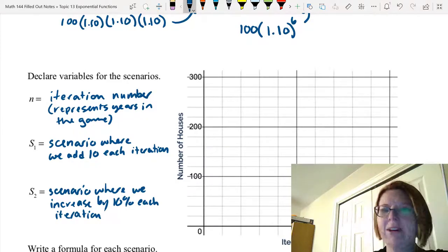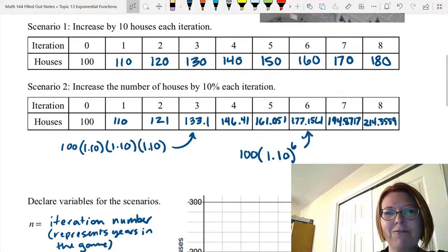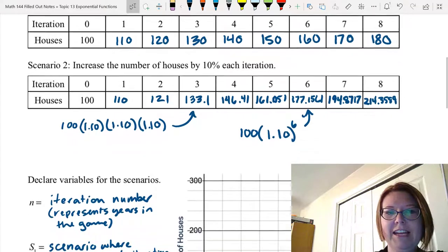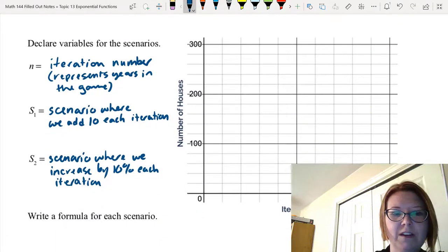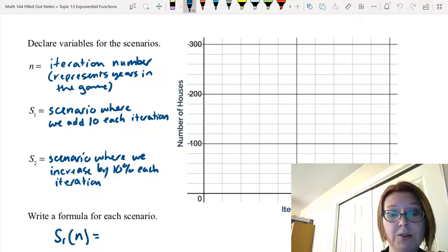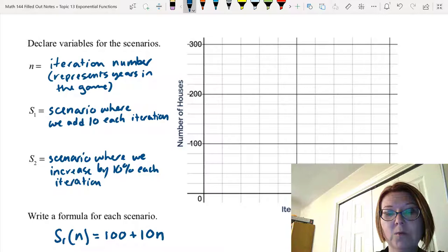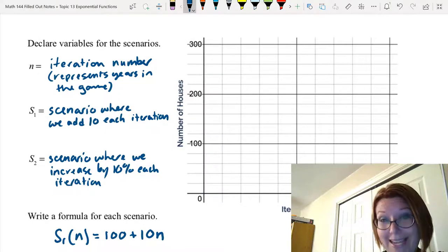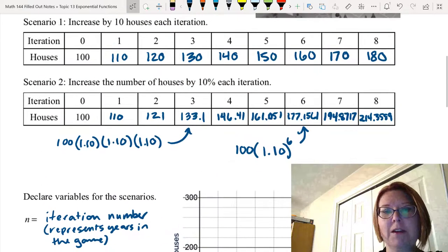Before we graph, let's actually write the formula. We know that this first scenario, we already figured that formula out. We're adding 10 each time. So for scenario one, S1(n), we're starting with 100 and then every time we do an iteration we're adding 10 times n. When we do iteration 3 we're adding 10 times 3. We can check that, it gives us 130.